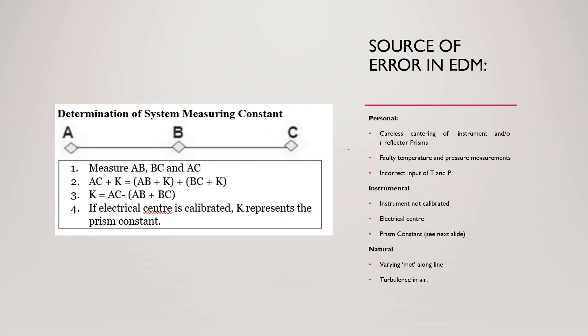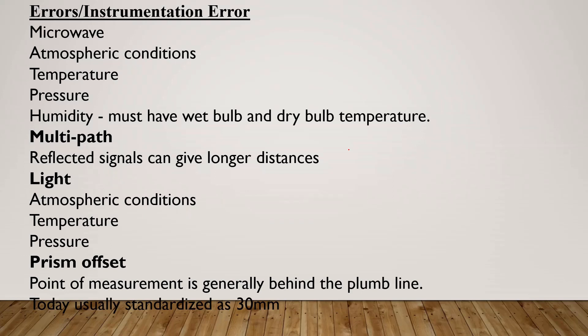For natural errors, you need to account for turbulent air velocity. Instrumentation errors include microwave atmospheric conditions, temperature changes, pressure changes, humidity, and wet bulb and dry bulb temperature. Multi-path errors occur when reflected signals give a longer distance reading. Atmospheric conditions including temperature and pressure changes also contribute.